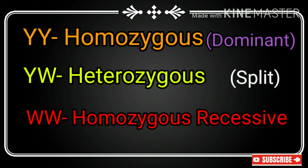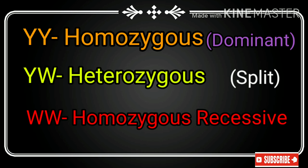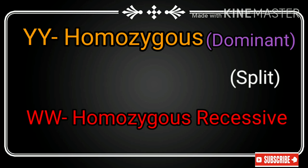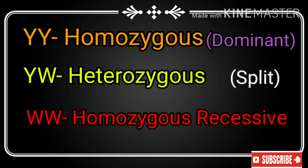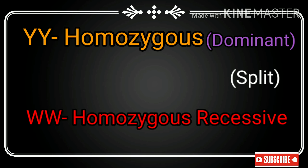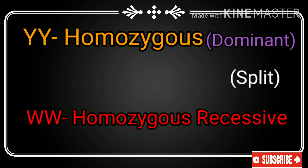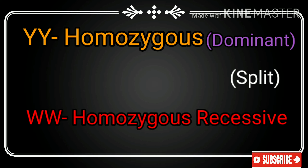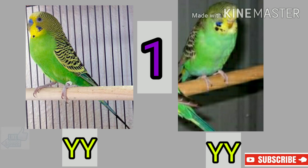If you look at the cheeks, you can see the cheeks in the same color. It's a white one. We'll look at 4 cases. If you look at the bird support, the first thing is YY is dominant. This is a YY.